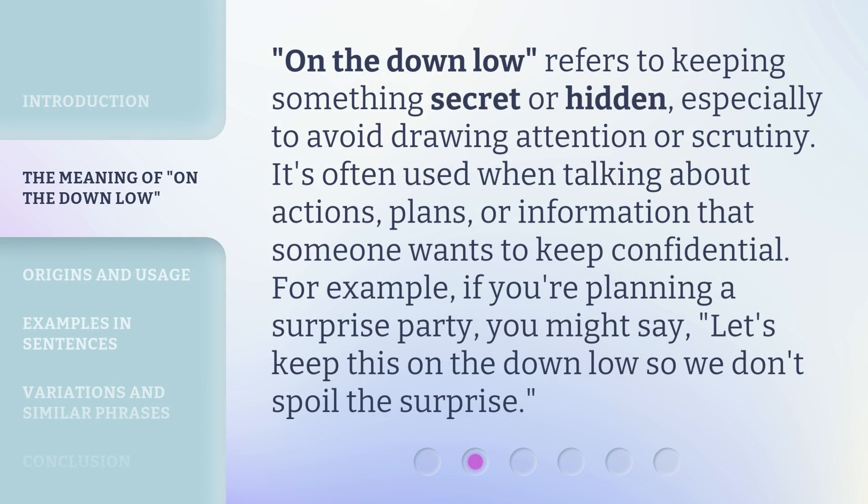On the down low refers to keeping something secret or hidden, especially to avoid drawing attention or scrutiny. It's often used when talking about actions, plans, or information that someone wants to keep confidential. For example, if you're planning a surprise party, you might say: let's keep this on the down low so we don't spoil the surprise.